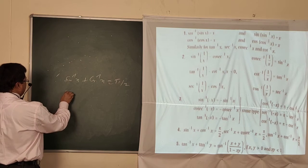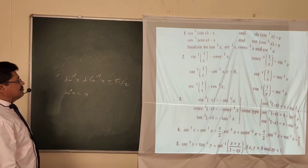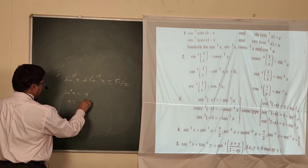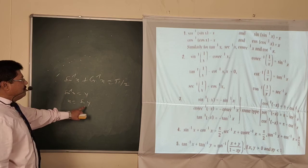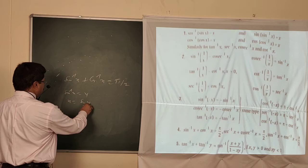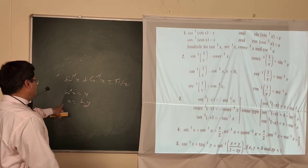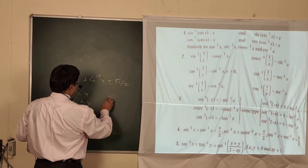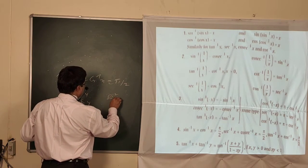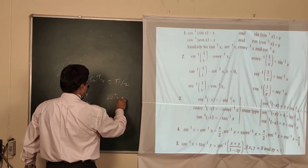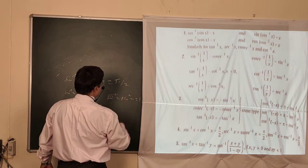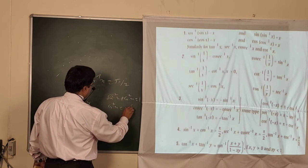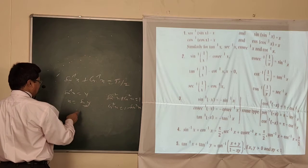Suppose we take sin⁻¹x = y. Removing the inverse function, we can write x = sin y. Now sin y can be converted in terms of cos using the identity sin²x + cos²x = 1, so cos²x = 1 - sin²x. Since we don't have a square here, take under root: cos y = √(1 - sin²y).